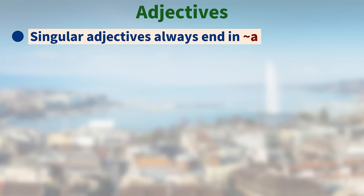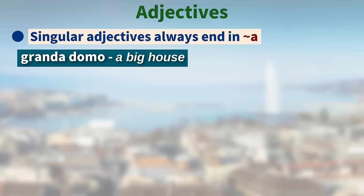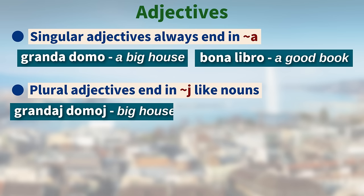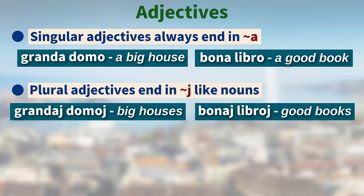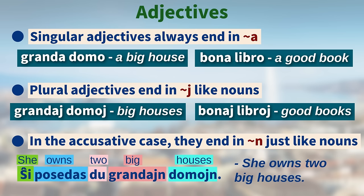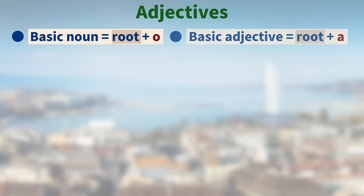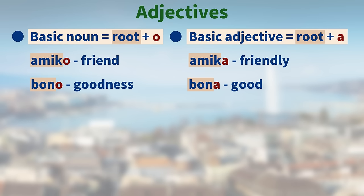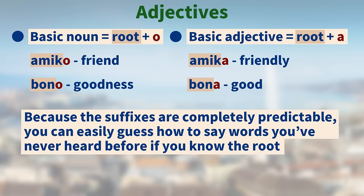Adjectives always end in -a: "granda domo" (a big house), "bona libro" (a good book). Plural adjectives end in -j like nouns: "grandaj domoj" (big houses), "bonaj libroj" (good books). In the accusative case they end in -n: "Ŝi posedas du grandajn domojn" — She owns two big houses. The -o suffix on nouns and -a suffix on adjectives attach to the root word, making related words easy to spot: "amiko" (friend) / "amika" (friendly), "bono" (goodness) / "bona" (good). Because the suffixes are completely predictable, you can easily guess words you've never heard before if you know the root.